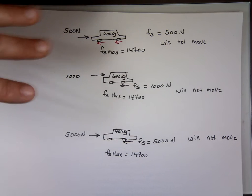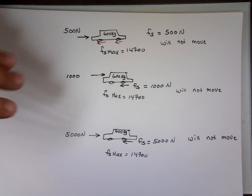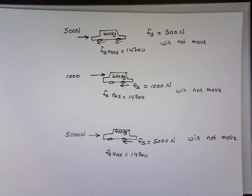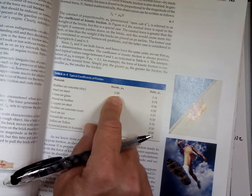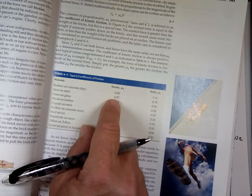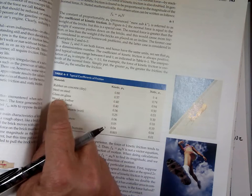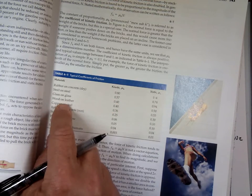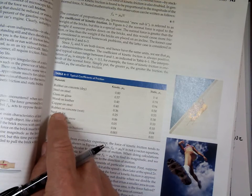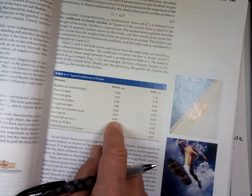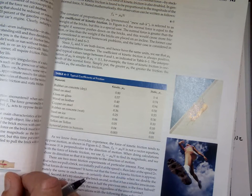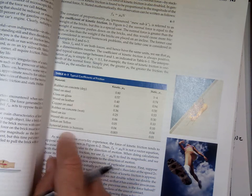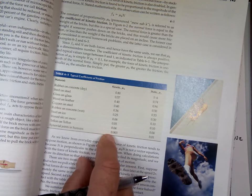If you ever had a car that was stuck and you try to push it, you push so hard to get it to move, but once it moves you notice it doesn't take that much force to keep it moving. That's because the coefficient of kinetic is less than static. For rubber on concrete: static is between 1 and 4, kinetic is 0.8. Steel on steel: static 0.74, kinetic 0.57. Glass on glass: static 0.94, kinetic 0.4. Steel on ice: static 0.1, kinetic 0.06. And for human joints: static 0.01, kinetic 0.003 - way smaller.